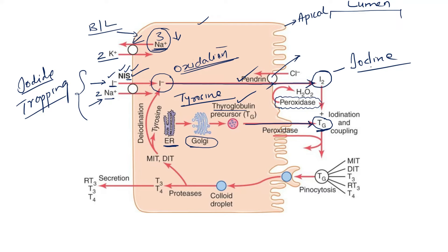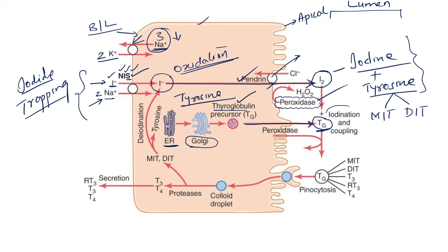The iodine combines with the tyrosine amino acid residues present in thyroglobulin, and this process also requires the enzyme peroxidase. When iodine combines with tyrosine, it results in the formation of two compounds: monoiodotyrosine (MIT) and diiodotyrosine (DIT). This process is called iodination of the tyrosine, or organification of the thyroglobulin.